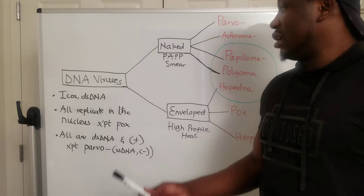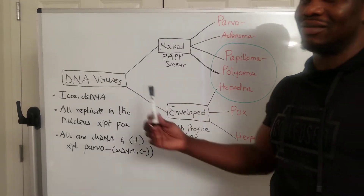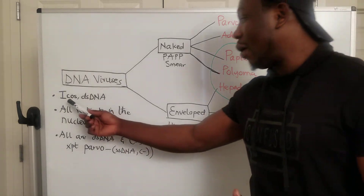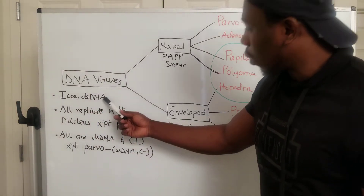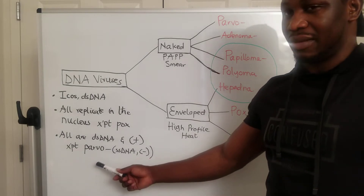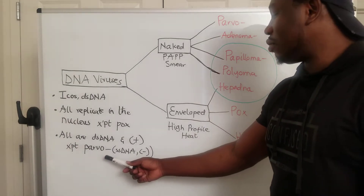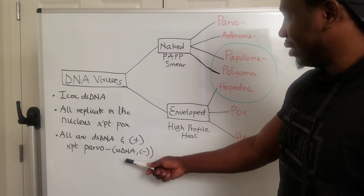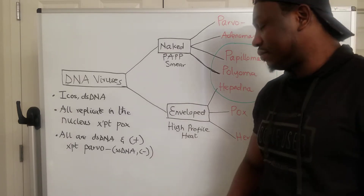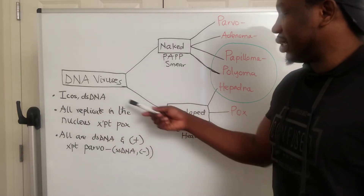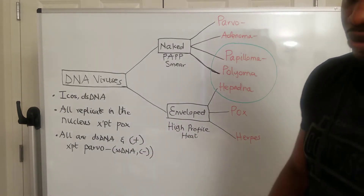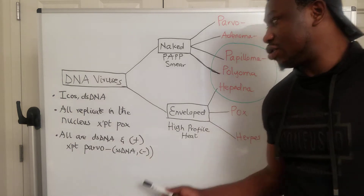This chart comes up on the exam often — if you know it, you can get most questions right. Remember: all DNA viruses are icosahedral, all have double stranded DNA, and they are positive — except for parvo virus, which has single stranded DNA and is negative. They all replicate in the nucleus except for the pox virus. Take note of those exceptions.